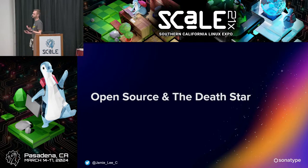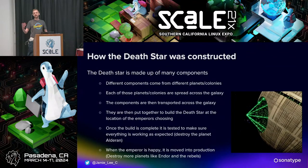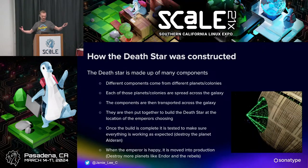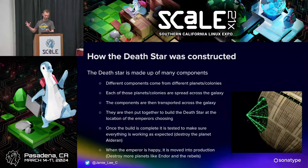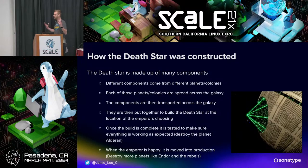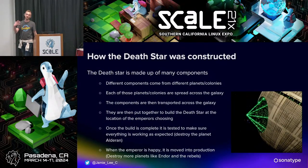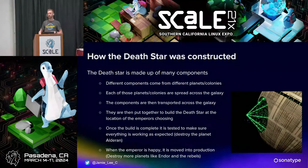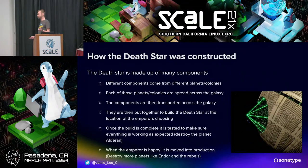Open source and the Death Star — probably thinking what are the similarities between these things. Well, how was the Death Star constructed? It was made up of many components. These components came from all different parts of the galaxy, spread across planets and colonies. These components were then transported across the galaxy to where they were finally assembled. Once the build was complete, it was tested — we saw what the Empire did with Alderaan, destroying a planet. And when the Emperor was happy, it was their move to production.